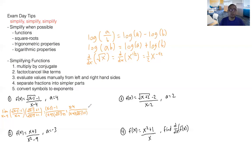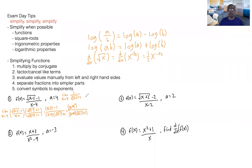The (x minus 4) on top and bottom cancel, leaving the limit as x approaches 4 of 1 over the square root of (x minus 3) plus 1. That's the simplest form. Now evaluate at x equals 4: 4 minus 3 is 1, the square root of 1 is 1, so this becomes 1/2. That's the answer for number one. If you had just plugged in x equals 4 directly into the original, you would have gotten a zero in the denominator — does not exist — so this is the correct approach.